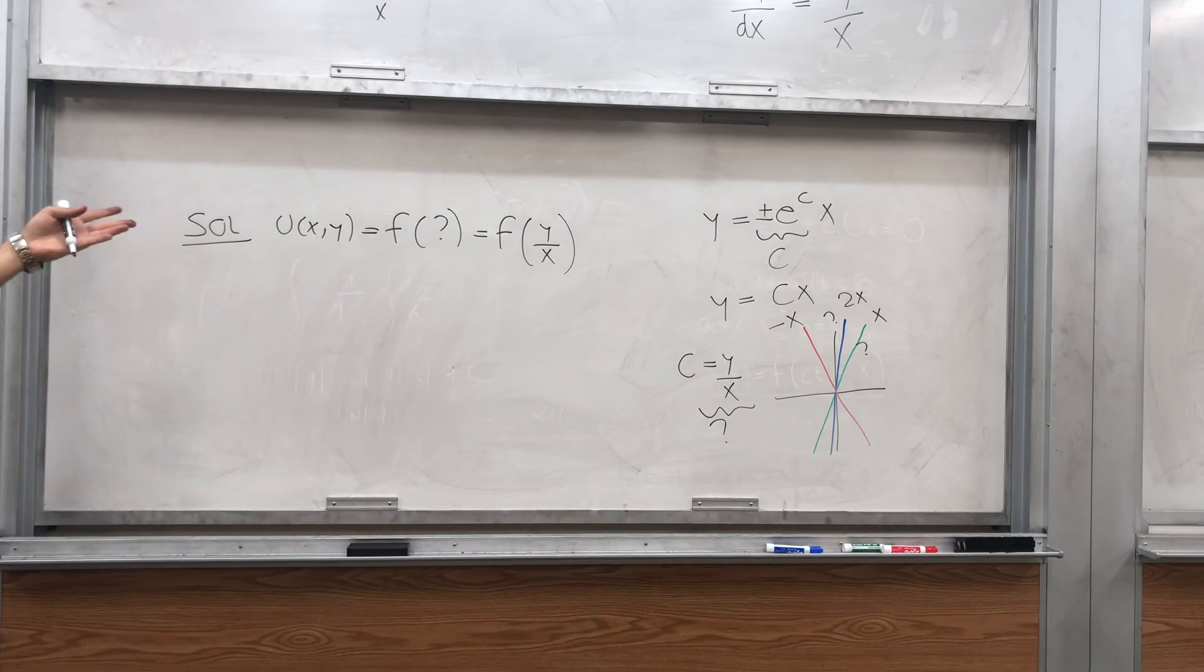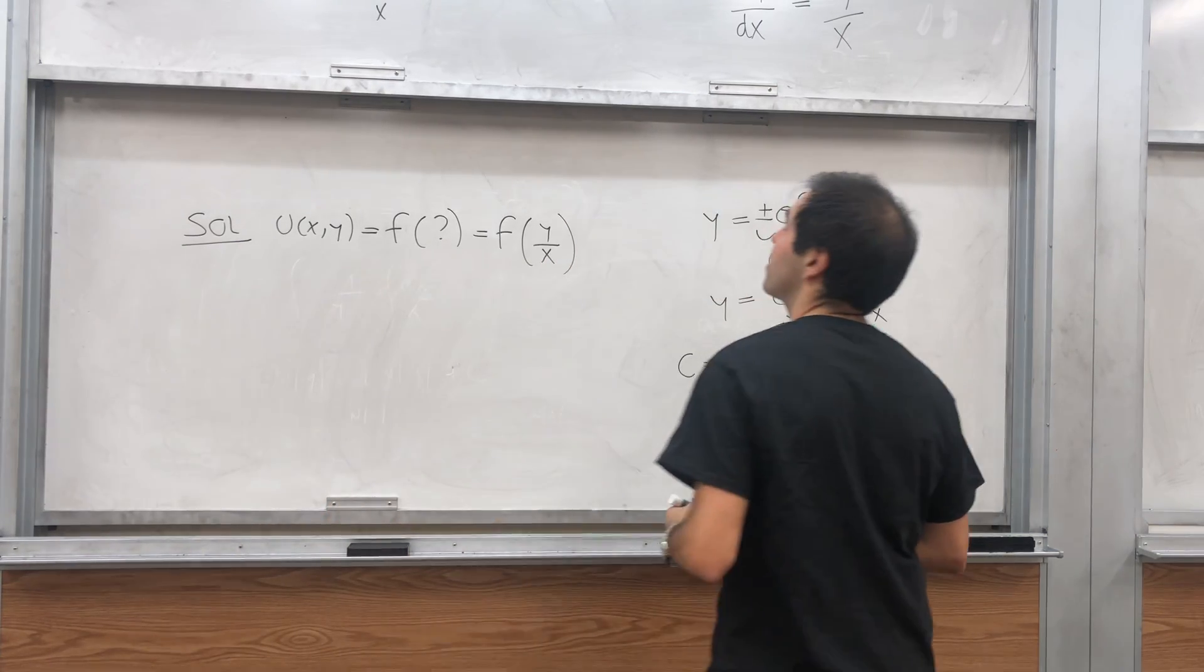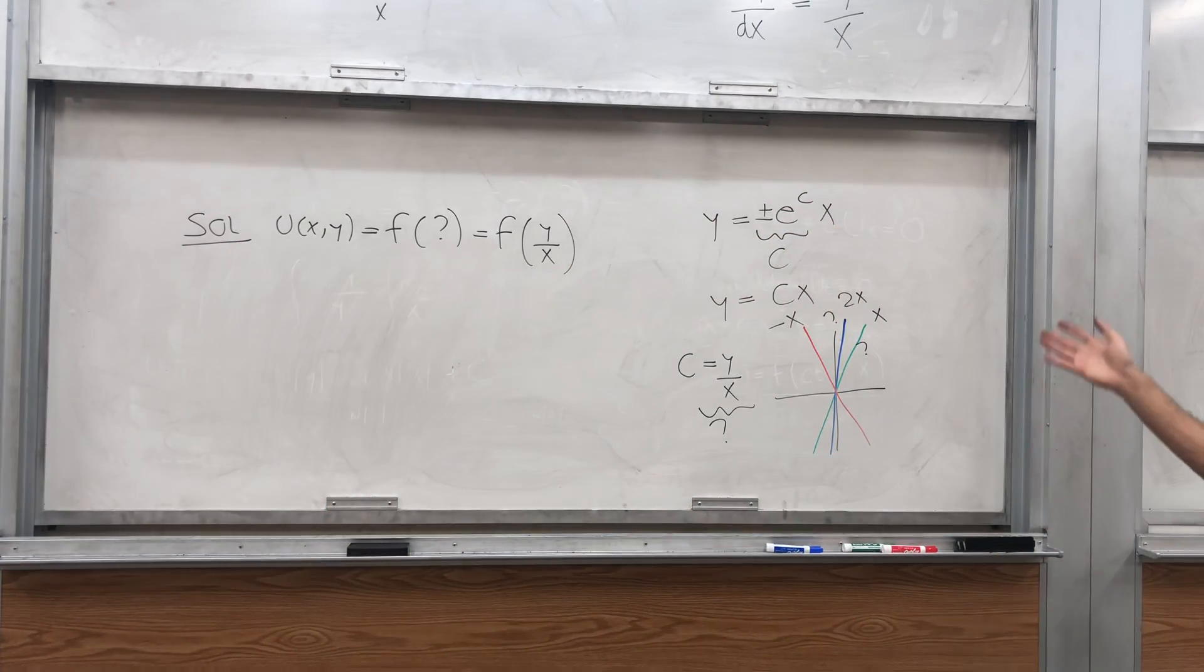And probably something more if x is zero or something, but I think here it's okay, because I think if x is zero, then we just get y u_y equals zero, and you can solve this.